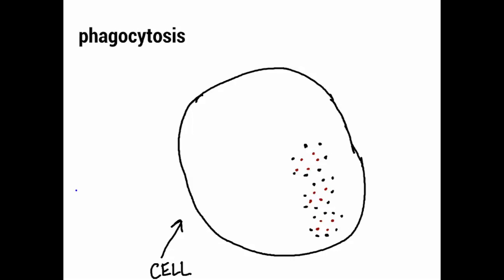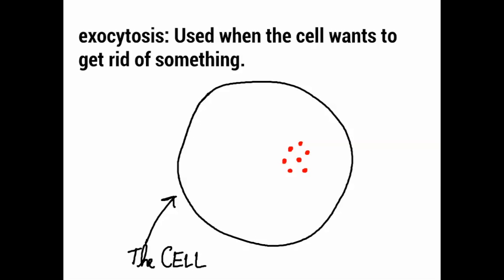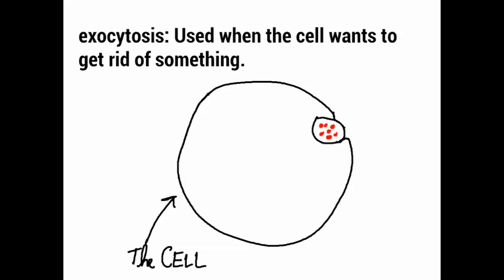The final type of transport we need to know about is exocytosis, and it's used when the cell wants to get rid of something. Let's say these freely floating red particles are something the cell wants to get rid of. The vesicle will come around like a cowboy wrangler with a rope and wrap around them until it creates a vesicle. After the vesicle is created, they will push it out towards the edge of the cell membrane, and the cell membrane will open up and push out those molecules it doesn't want anymore. Those molecules will then naturally diffuse outside the cell and go somewhere else.